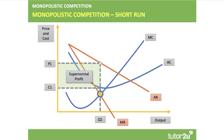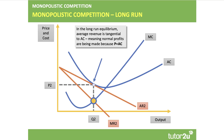The short run diagram shows the firm able to make a supernormal profit at the profit maximizing output Q1. This tends to bring about the entry of new products into the market. Markets get saturated with products coming in trying to compete away the profits — in that sense it's a form of hit and run competition. In the long run this process finishes when the average revenue curve is just tangential to average cost, where at profit maximizing equilibrium Q2, the price P2 equals average cost.